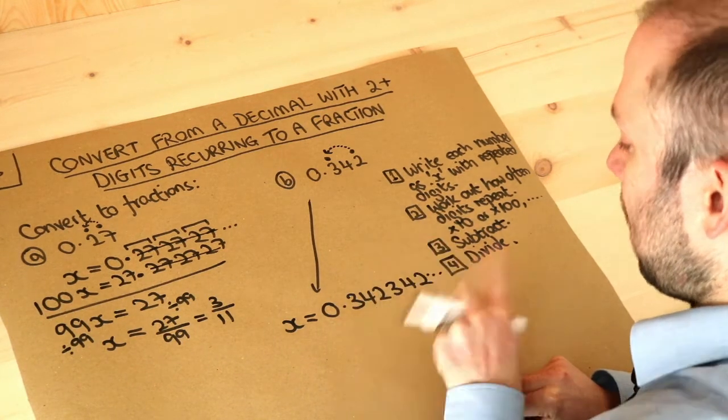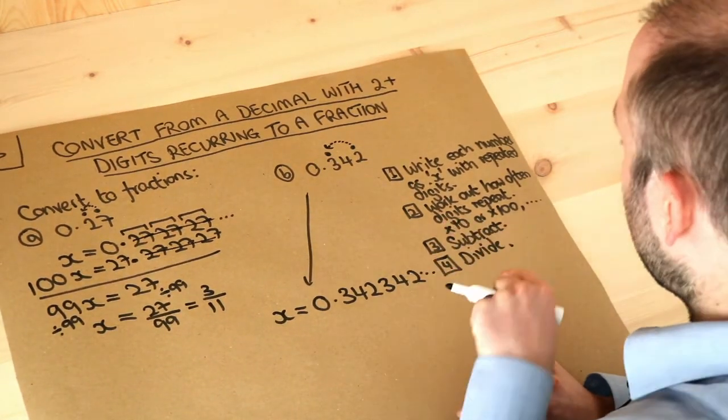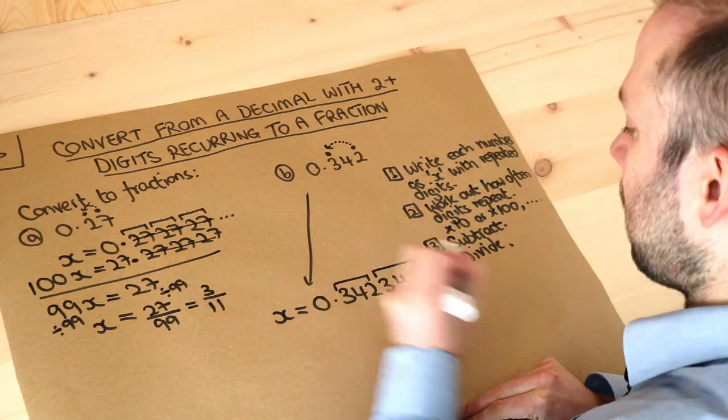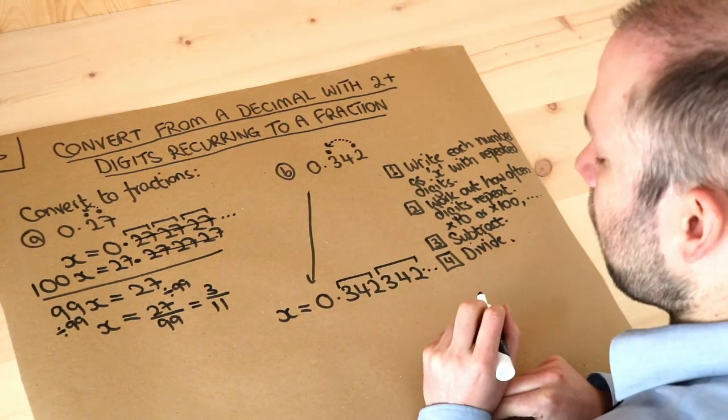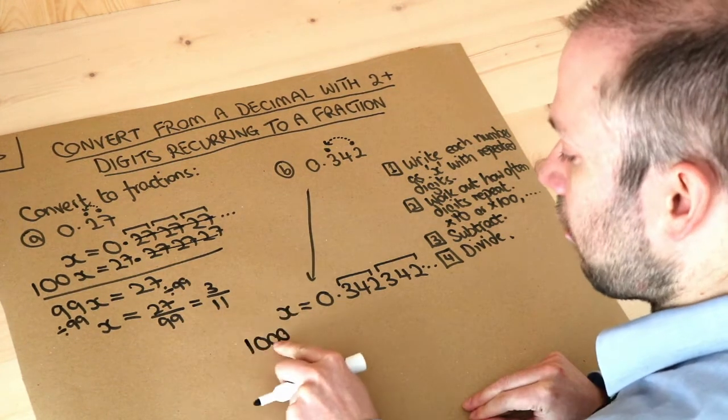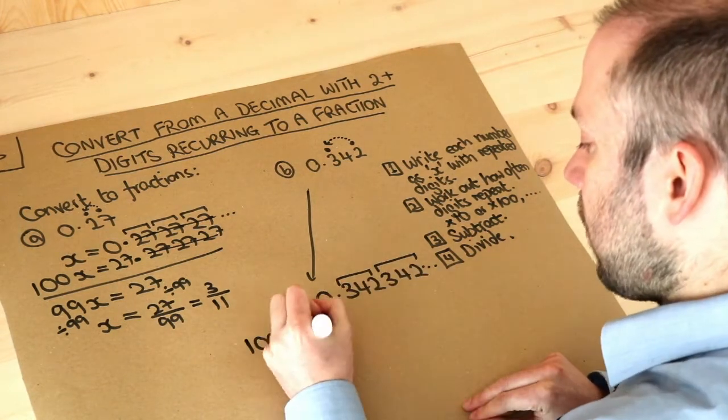We'll do dot dot dot because these go on forever, and then we identify as per step two how often the digits repeat. Well, 342 342 is every three digits, so therefore we multiply both sides of the equation by a thousand, noting that a thousand has three zeros corresponding to the three digits that are repeating.